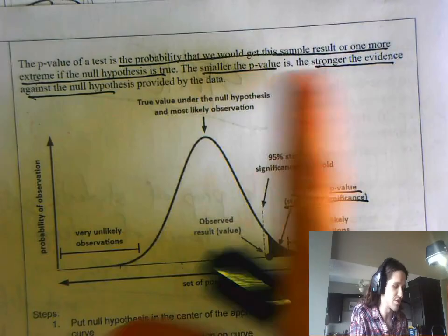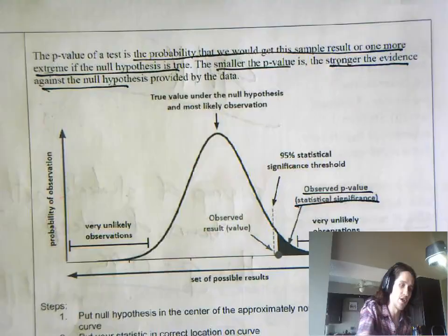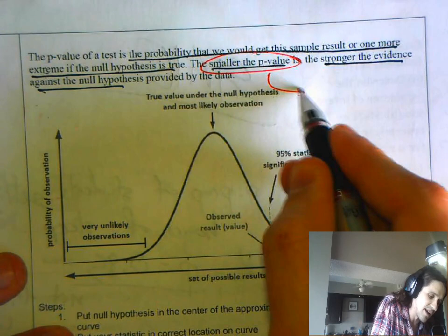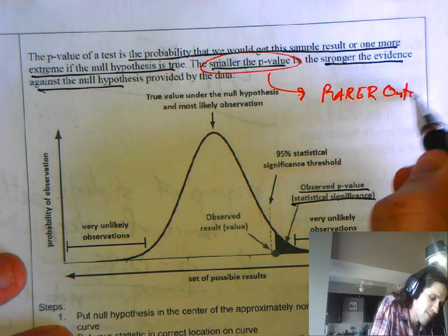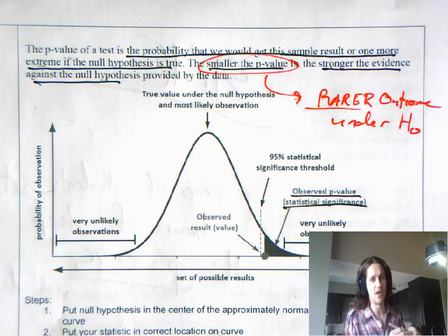What's the probability of getting a result, the probability that we would get this sample result or one more extreme if the null hypothesis is true? Maybe one of the most important ideas out of 9.1. The smaller the p-value, the stronger the evidence. Remember, a smaller p-value means that it's a rarer outcome.